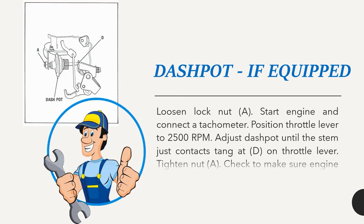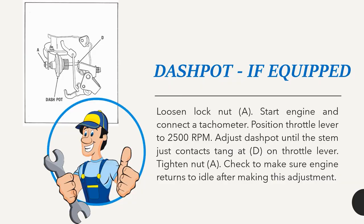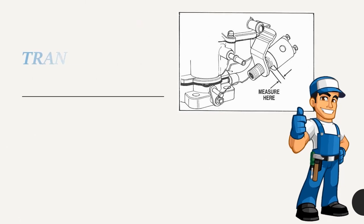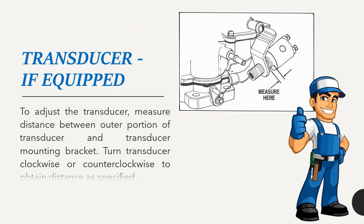Dashpot (if equipped): Loosen lock nut A. Start engine and connect a tachometer. Position throttle lever to 2500 RPM. Adjust dashpot until the stem just contacts tang at D on throttle lever. Tighten nut A. Check to make sure engine returns to idle after making this adjustment. Transducer (if equipped): Measure distance between outer portion of transducer and transducer mounting bracket. Turn transducer clockwise or counter-clockwise to obtain distances specified.